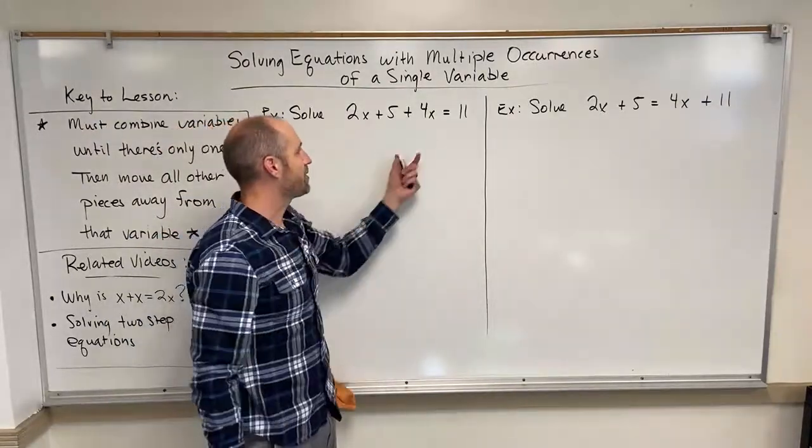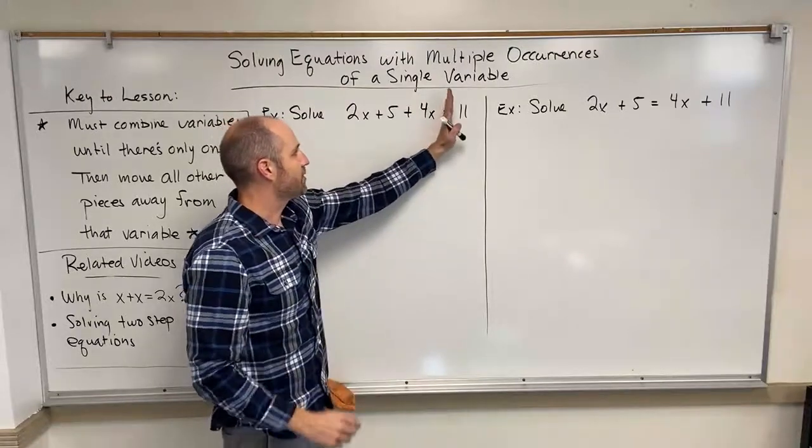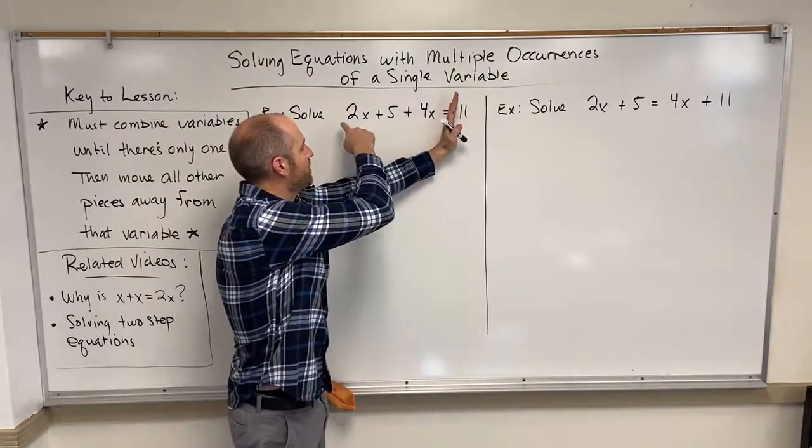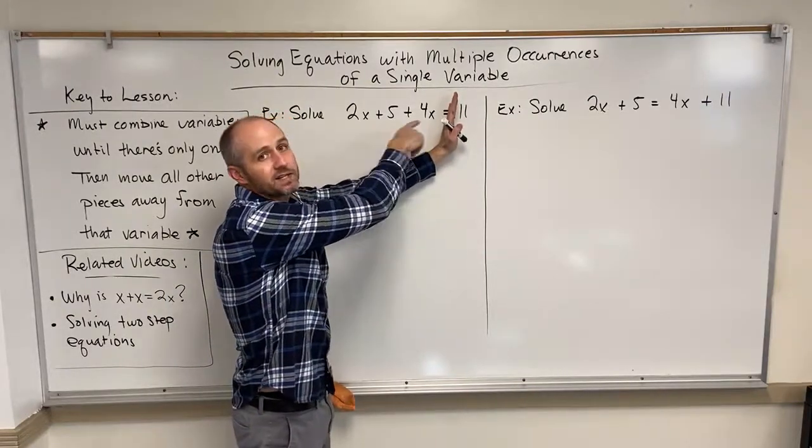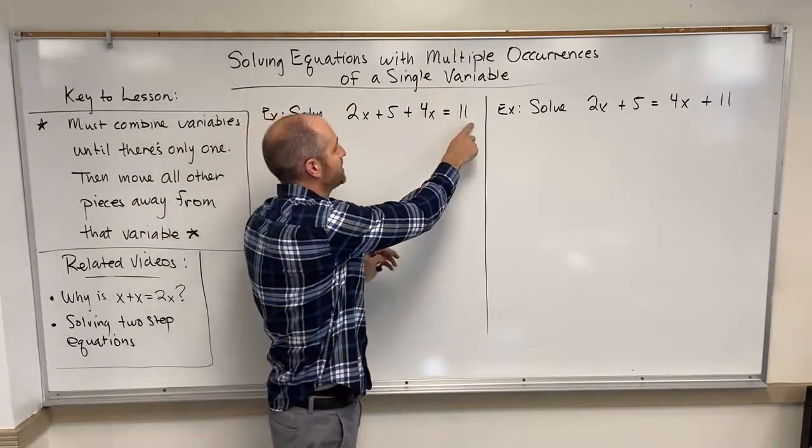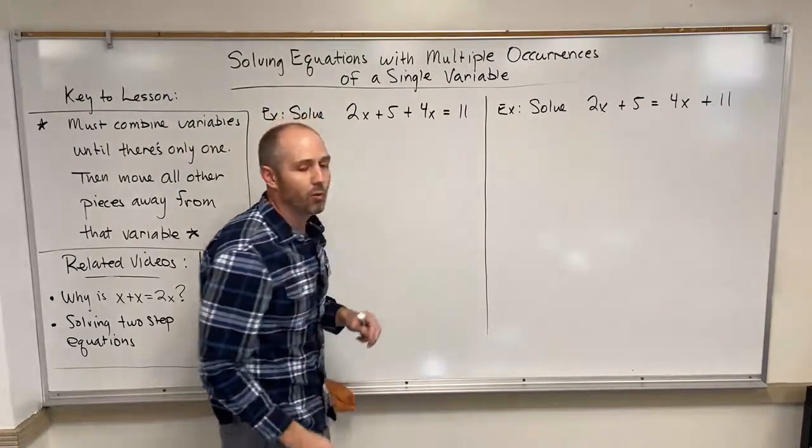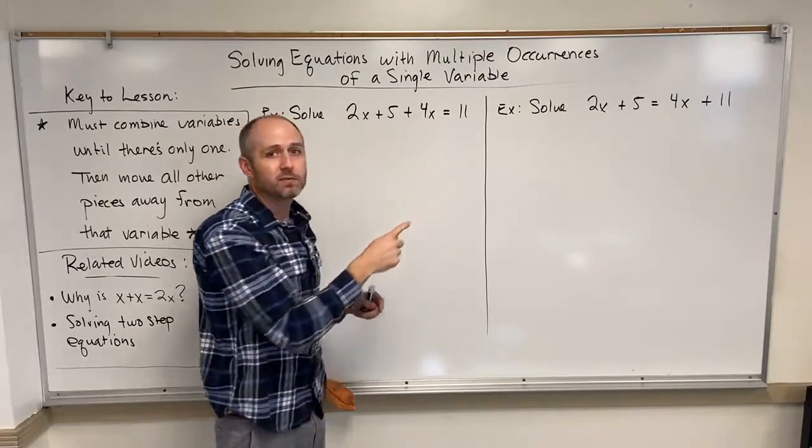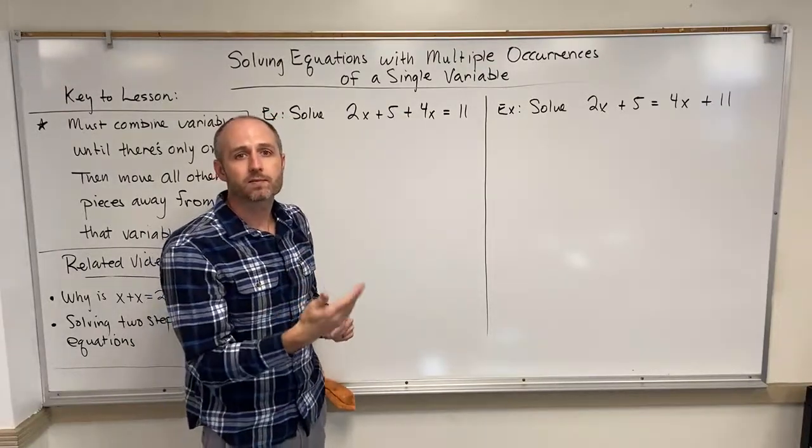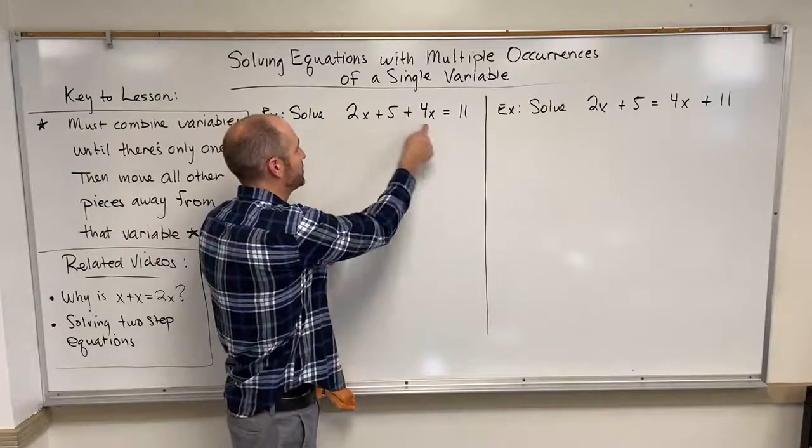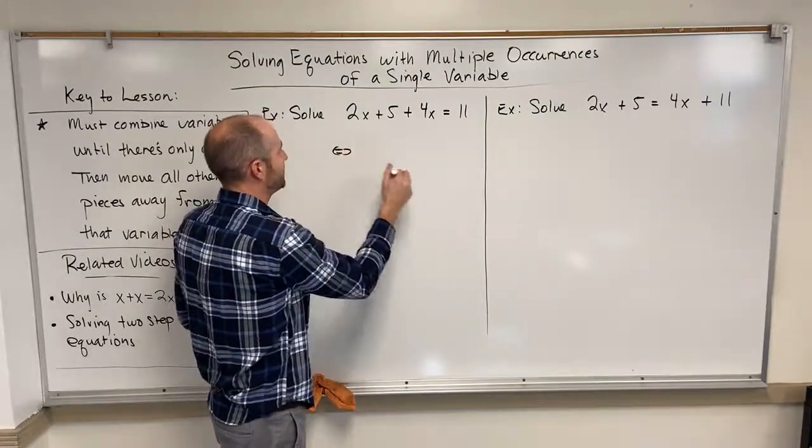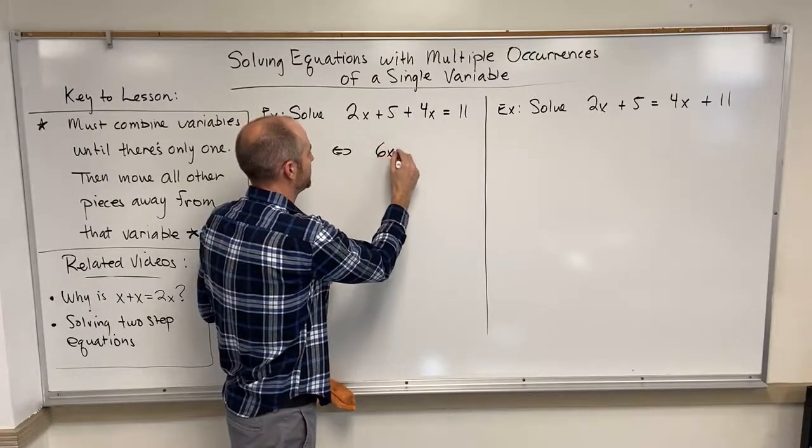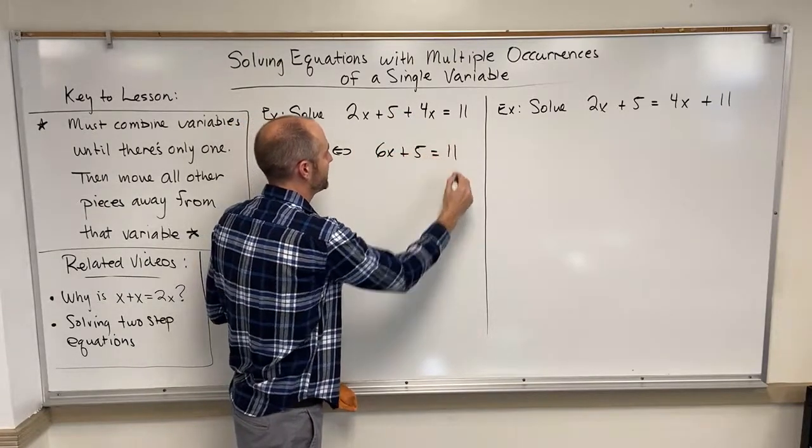In this first example, these three terms, so remember that the equal sign separates the two sides of the equation. These three terms are on the left-hand side of this equation, and then this term is on the right-hand side. Why that matters is because these two occurrences of the variable, they're ready to be combined because they're already on the same side of the equation. We can just add 2x and 4x to get 6x. So here, if we add 2x and 4x, we'll get 6x plus 5 equals 11.